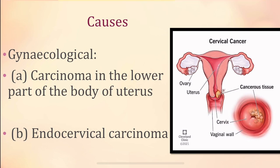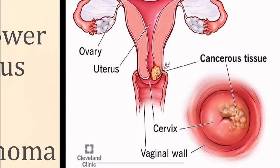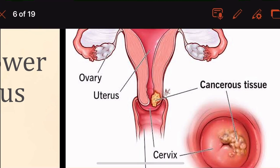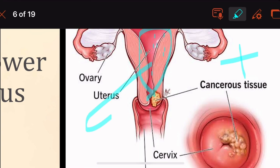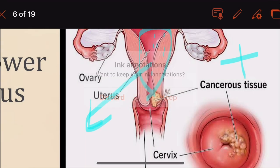Pyometra is associated with carcinoma in the lower part of the body of the uterus and also endocervical carcinoma, as you can observe in the picture. In this condition, in association with this, we have pyometra — that is, accumulation of pus in the uterine cavity.